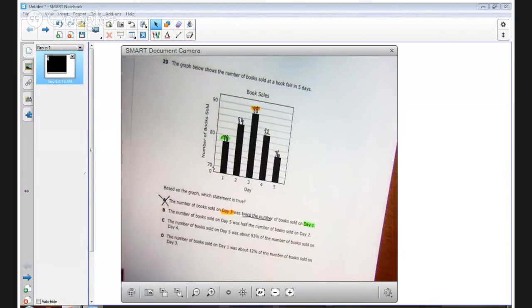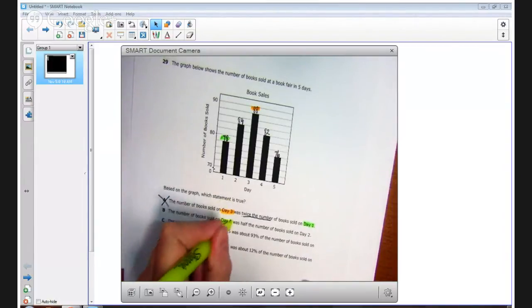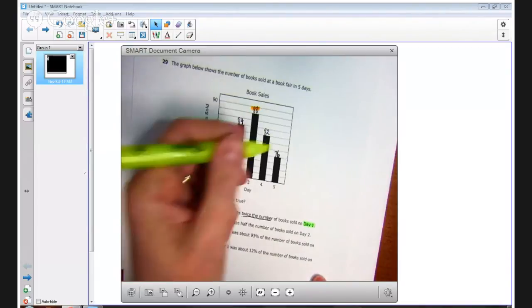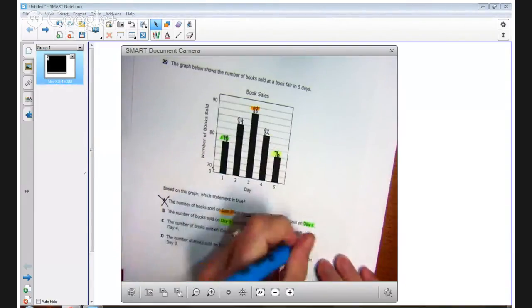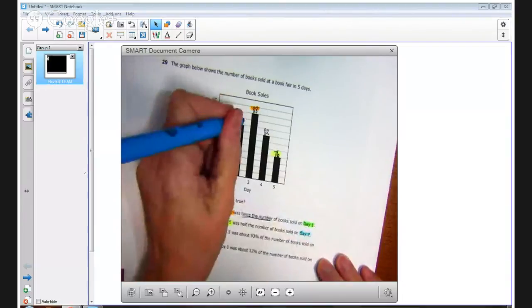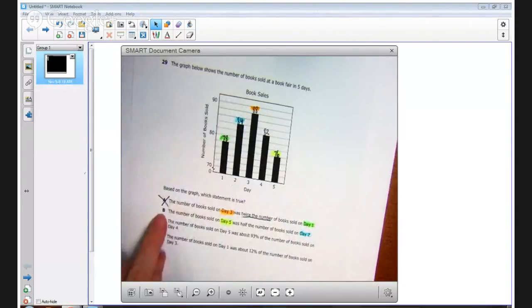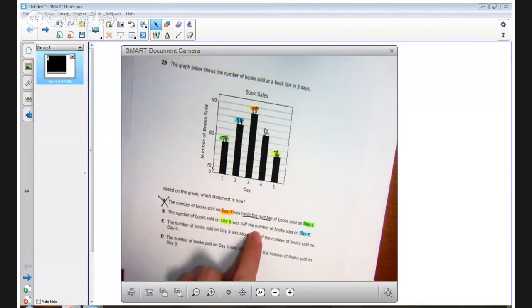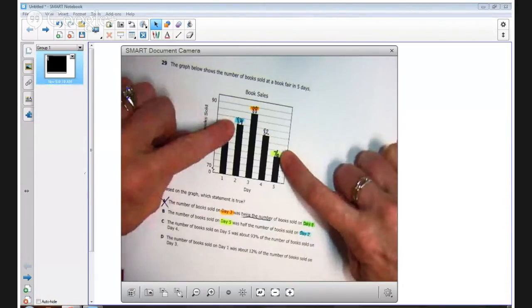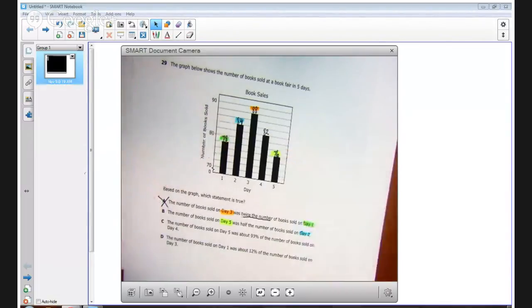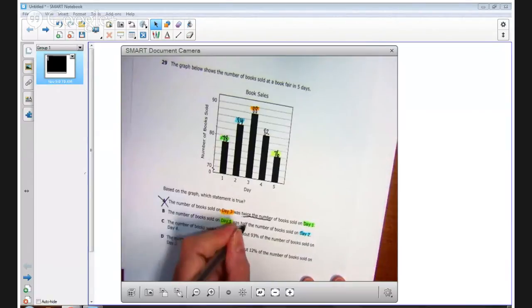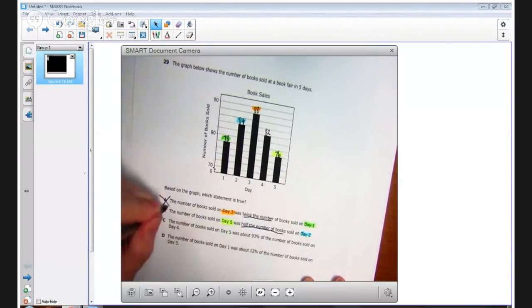I feel certain that if the students had had those numbers on the bar graph, they would not have chosen answer choice A. Let's look at answer choice B. The number of books sold on day five, choosing a different color. I'm going to highlight day five in yellow. I'm going to highlight that number 76 in yellow. Day two, a different color, day two is 84. It says on B, the number of books sold on day five was half the number of the books sold on day two. Well, on day five we have 76. And on day two we have 84. Seventy-six is definitely not half the number of books. That doesn't make any sense. So answer choice B is incorrect.